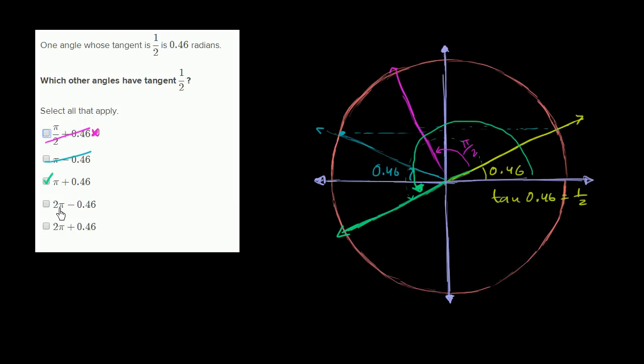Let's look at these other choices. 2π minus 0.46. 2π gets you back to the positive x-axis, and then you subtract 0.46. That's going to be this angle right over here. That looks like it has the negative slope of this original ray, so these aren't going to have the same tangent.